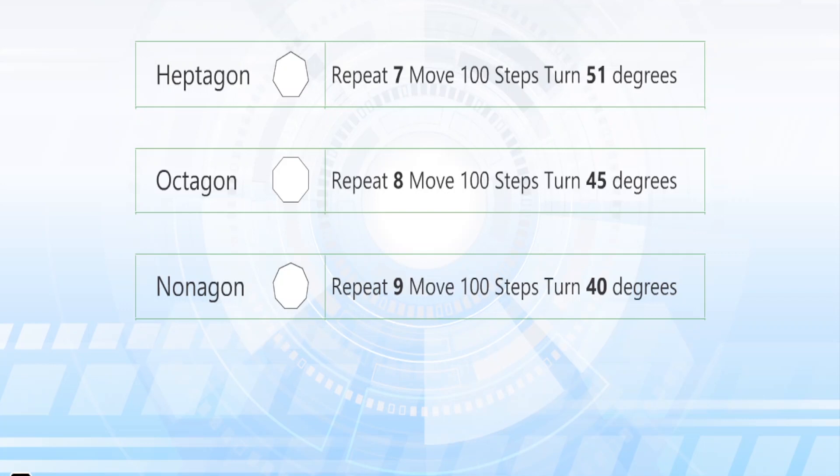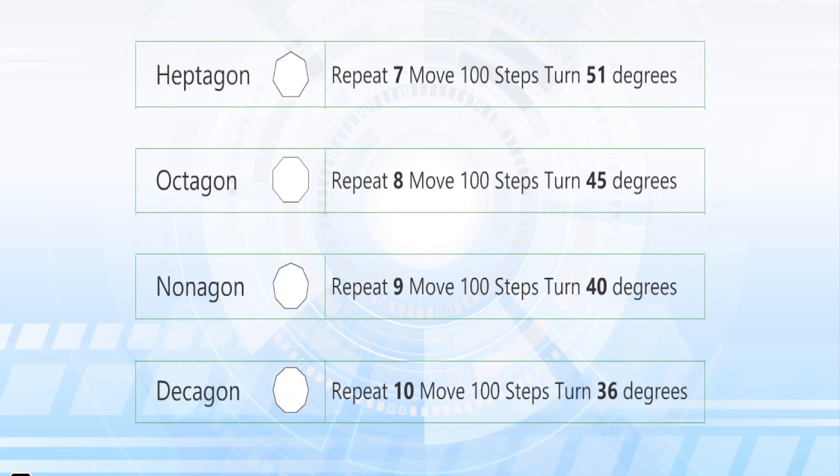Nonagon: Repeat 9, Move 100 steps, Turn 40 degrees. Decagon: Repeat 10, Move 100 steps, Turn 36 degrees.